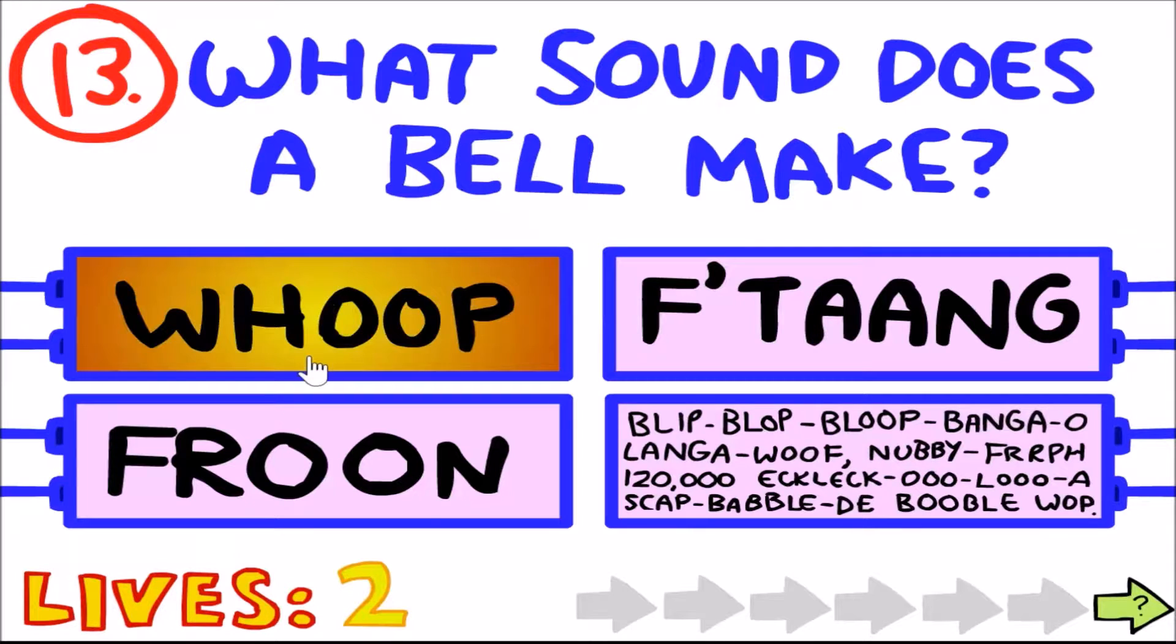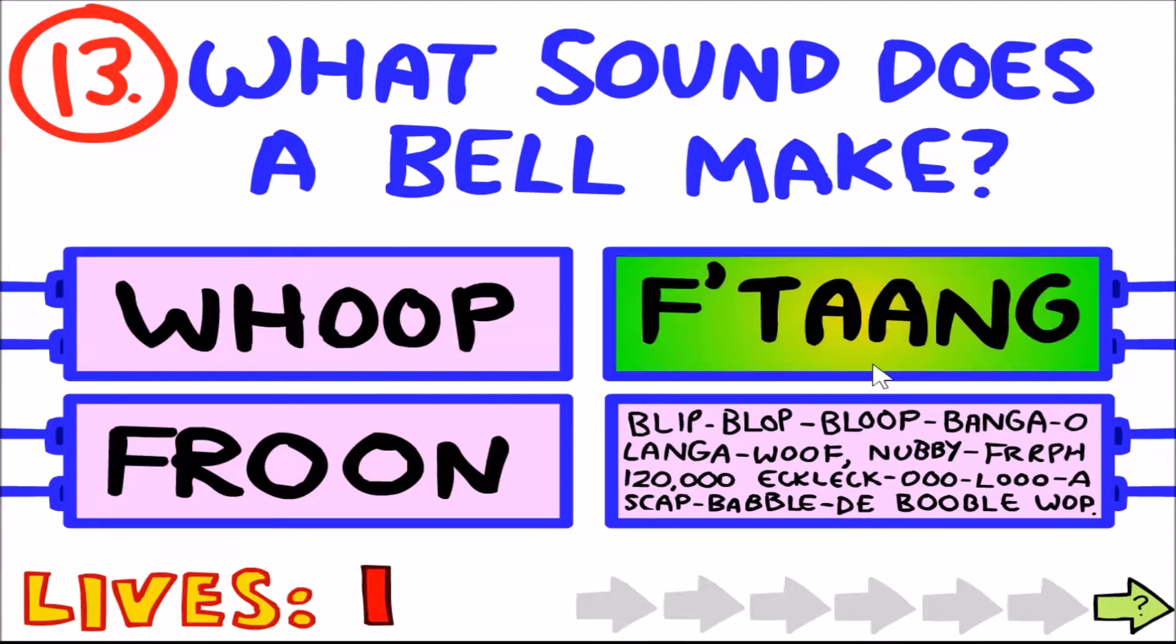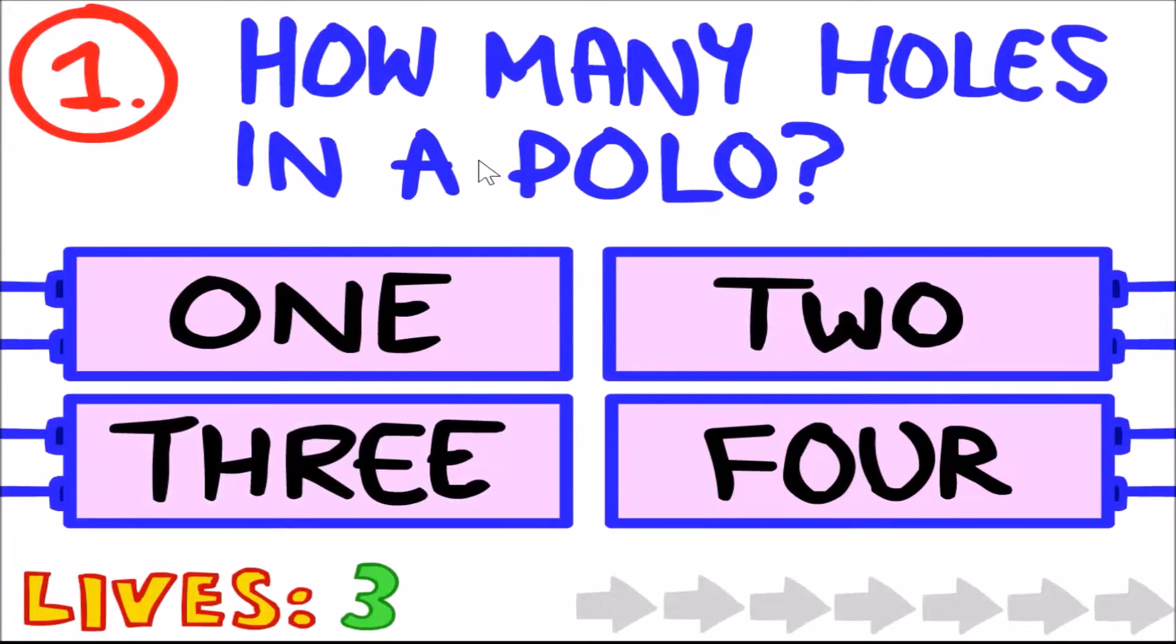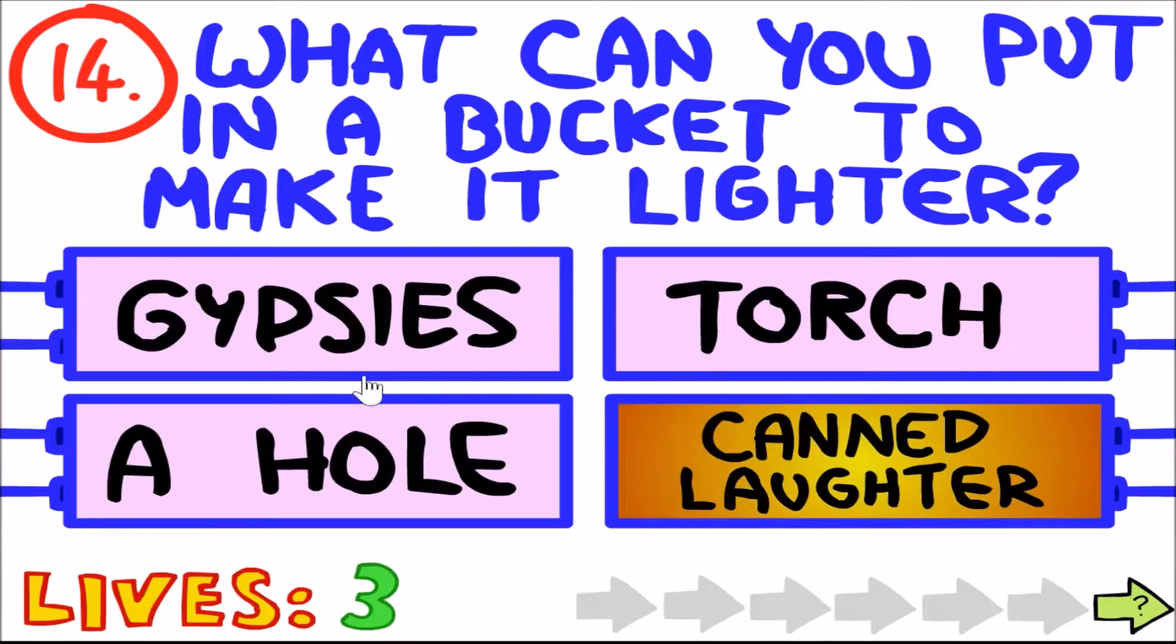What sound does a bell make? What can you put in a bucket to make it lighter? A hole. What if you put a hole in a bucket? Whatever. Gypsies, canned laughter, a hole. So I automatically get this right. I mean, if you torch a bucket, that means it's not there anymore. Canned laughter, that would just... torch.